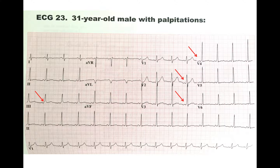Next, you want to determine: is this sinus rhythm? You look at lead 2 and look for the P wave. Is there a P for every QRS? There is a P for every QRS. And is there a QRS for every P? There is a QRS for every P. So you know this is in sinus rhythm.